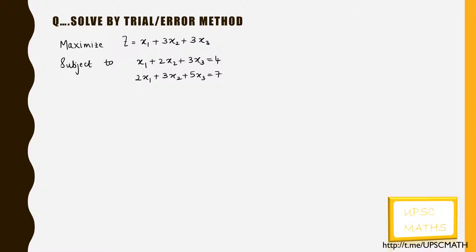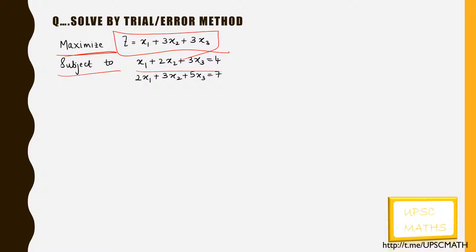The question is: maximize z = x1 + 3x2 + 3x3, subject to the constraints x1 + 2x2 + 3x3 = 4 and 2x1 + 3x2 + 5x3 = 7.